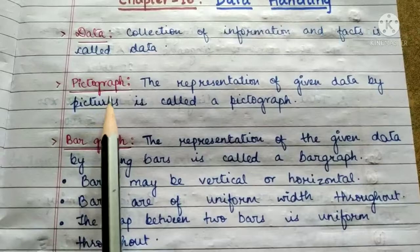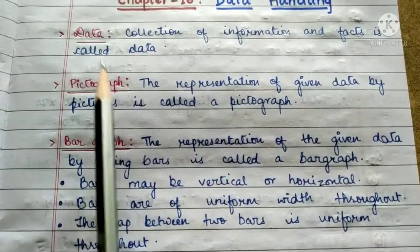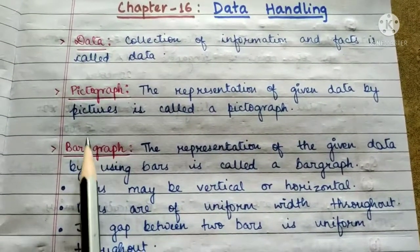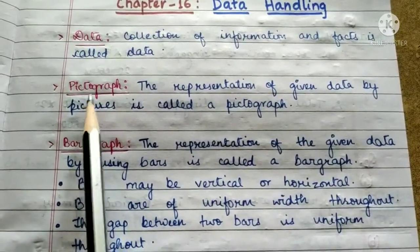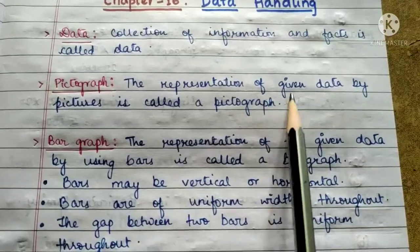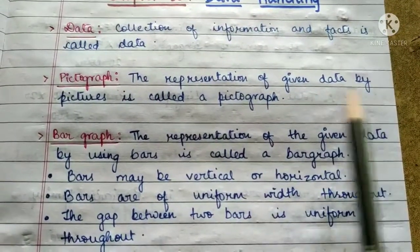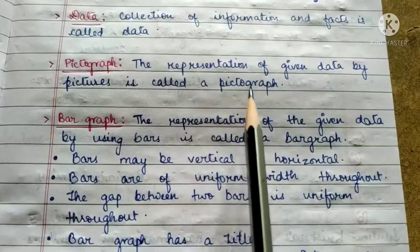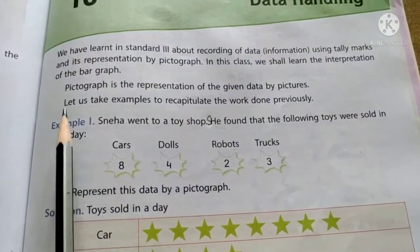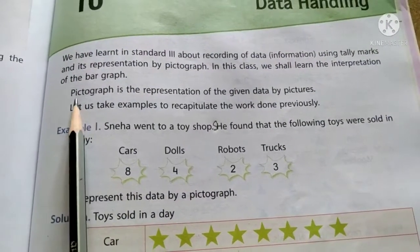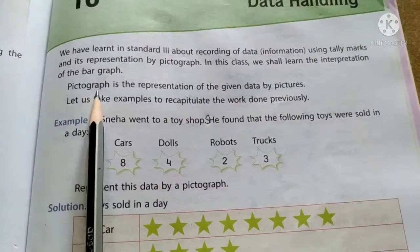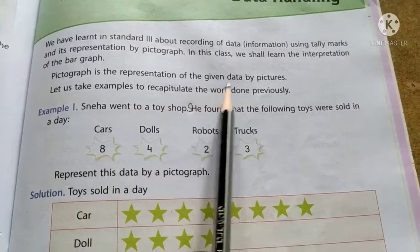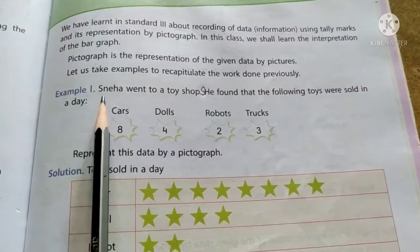Now let us look at some new terms you will come across in this chapter. Pictograph — the representation of given data by pictures is called a pictograph. Let us understand pictograph, that is the representation of given data by pictures, with an example.